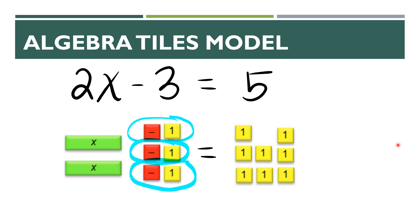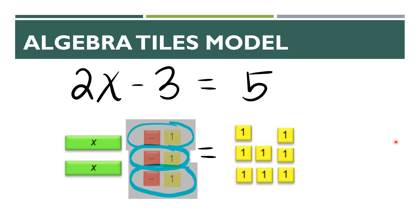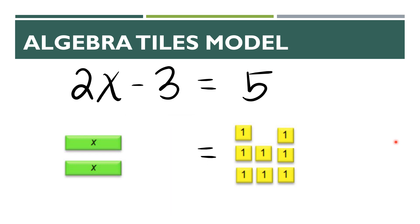Why are these called zero pairs? Because one tile represents negative one and the other represents positive one — when you combine them, they create zero. So we can remove zero pairs from our equation, and those fade away.